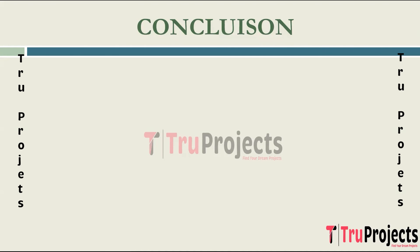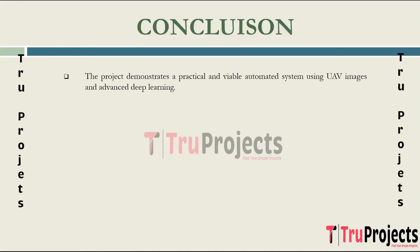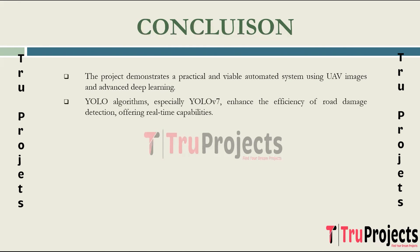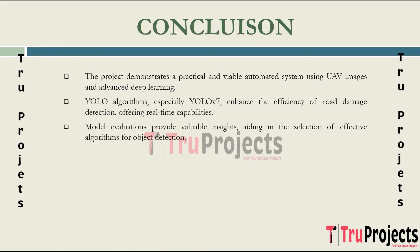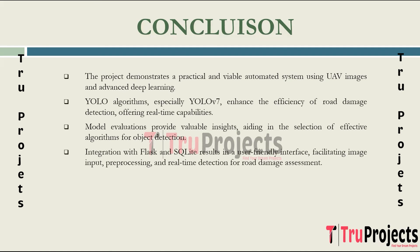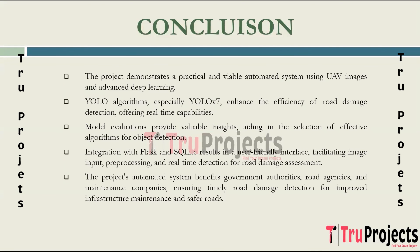Conclusion of the project. The project successfully implements an automated system using UAV images and advanced deep learning, showcasing its practicality and viability. Leveraging YOLO algorithms improves the efficiency and accuracy of road damage detection, especially with the real-time capabilities of YOLO V7. Evaluation of the models provides valuable insights into their performance for object detection, aiding in algorithm selection. Integration with Flask and SQLite creates a user-friendly interface for image input, pre-processing and real-time detection. The project benefits government authorities, road agencies and maintenance companies by providing an efficient automated system for timely road damage detection, leading to improved infrastructure maintenance and safer roads.